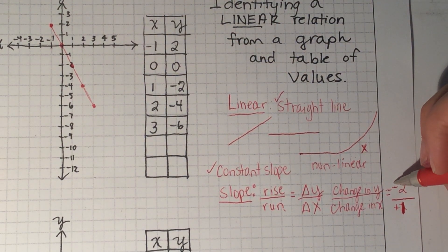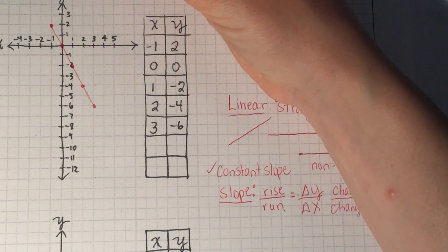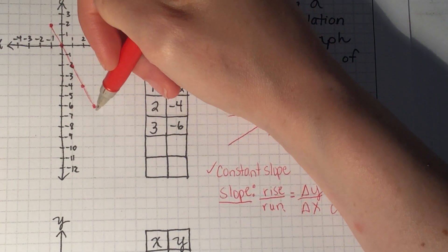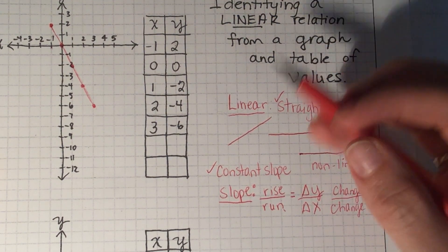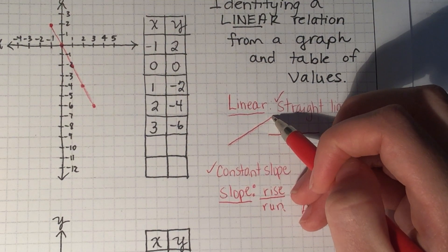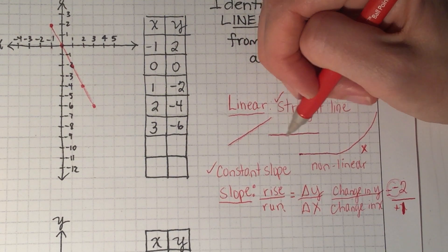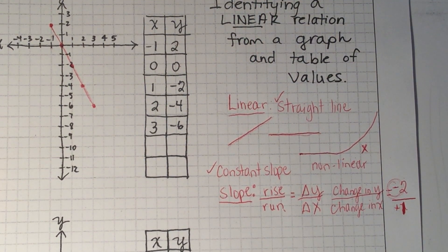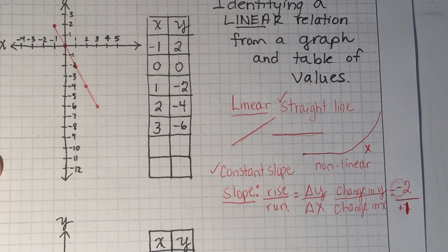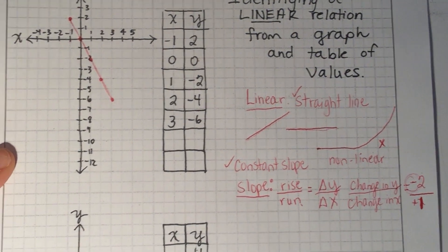Just for a bit of extra information: in this example the slope is negative two over one, so our slope is negative. Whenever we have a negative slope, our line is going to go downhill from left to right. On the other hand, if the slope is going uphill from left to right, that would be a positive slope. And a flat line has no slope at all — it's zero. So that's one example of how to determine if a graph is linear by just looking at the graph.